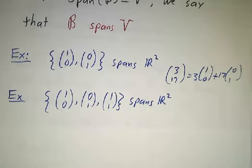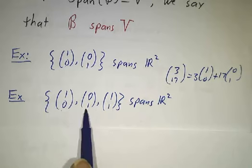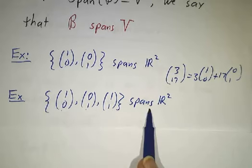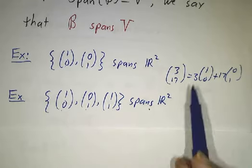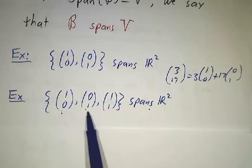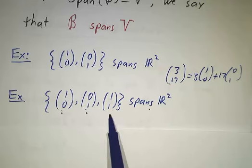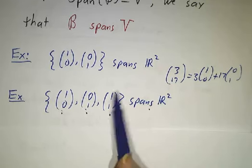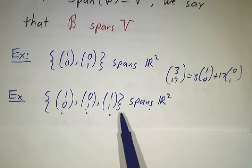You could also say that (1, 0), (0, 1) and (1, 1) span R². You can get any vector as a linear combination of these three guys. You get (3, 17) takes 3 times this plus 17 times this plus 0 times this. You don't need the third guy, but it doesn't do you any harm. It still spans.